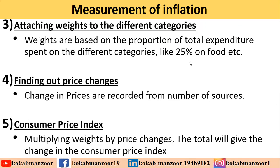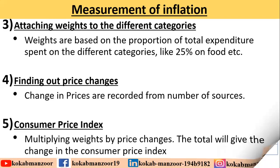Next, you attach weights to different categories — how much percentage of income is spent on specific things: 25% on food, 10% on clothes, 30% on utilities, and so on. Then you find out the price change — what was the previous price and what is the current price. Finally, you calculate the CPI, the Consumer Price Index, which is perhaps the most commonly used method for measuring inflation. You multiply the weights by the price changes and the total gives you the change in the Consumer Price Index.